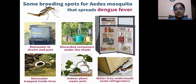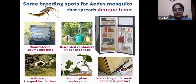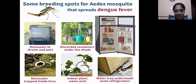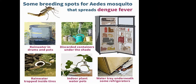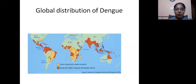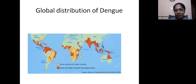Cases are definitely increasing. A continuous bout of rain followed by sunlight is a recipe for dengue. Various sources include indoor plants, water pots which must be changed regularly, and water under refrigerators. Dengue is globally distributed and with respect to India, we are completely red — it is an endemic disease for us.